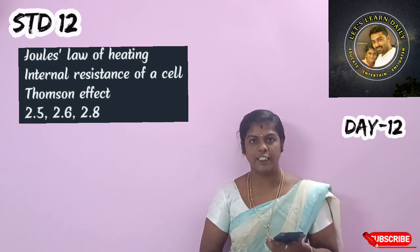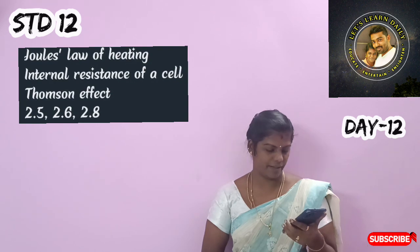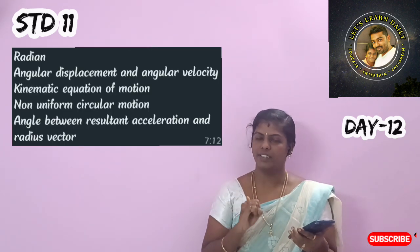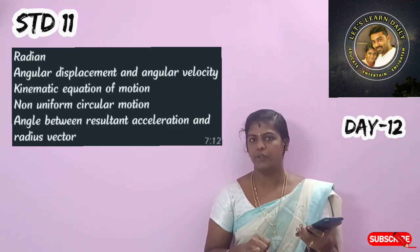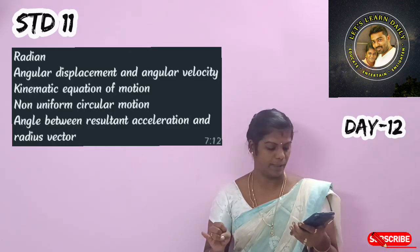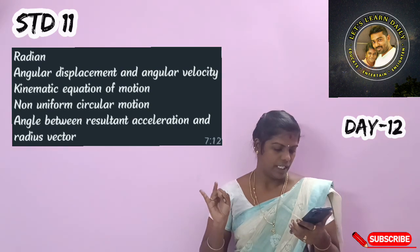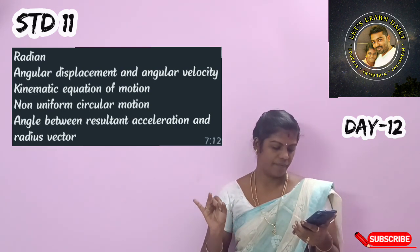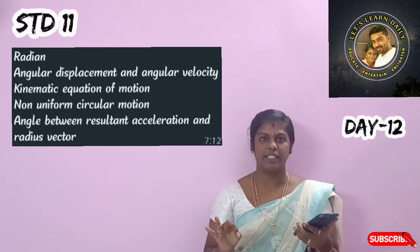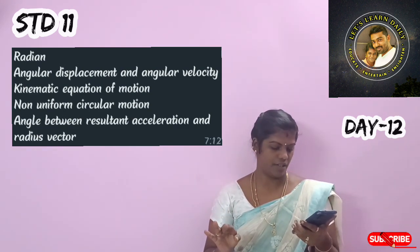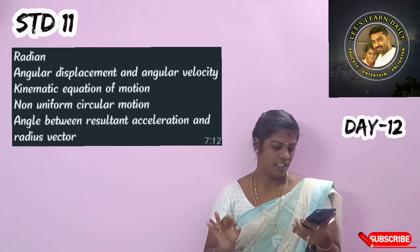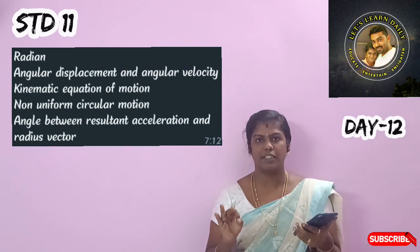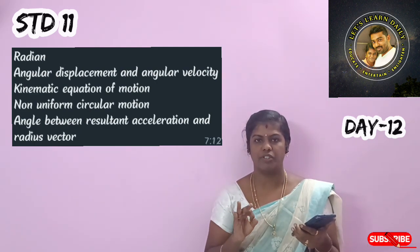12th standard done. Next, 11th standard: define radian, that is one radian. Angular displacement and angular velocity. Next, kinematic equations of motion for circular motion.